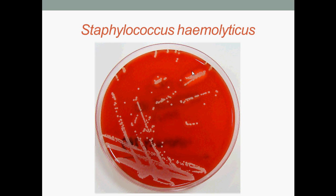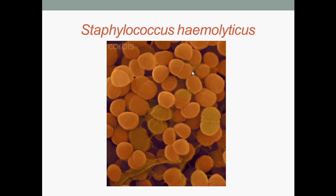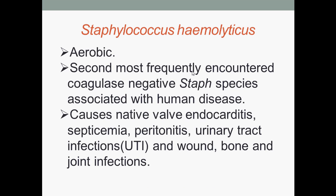This is Staphylococcus haemolyticus. They are aerobic and are the second most frequently encountered coagulase-negative staph species associated with human disease. They cause native valve endocarditis, septicemia, peritonitis, urinary tract infections, and wound, bone, and joint infections.